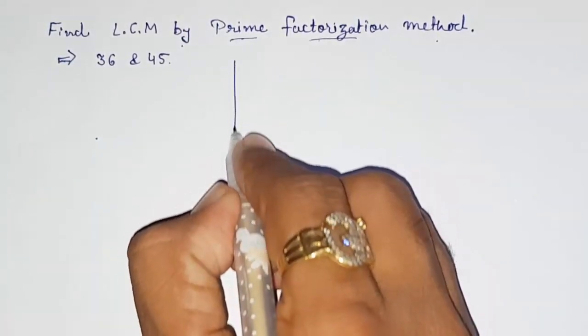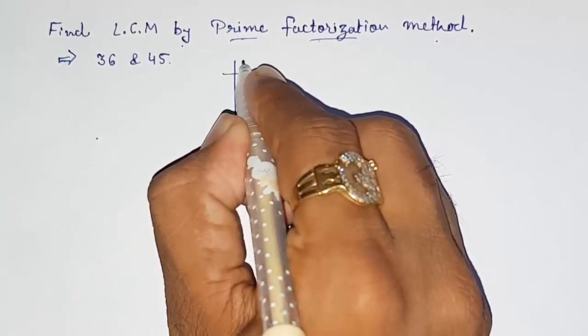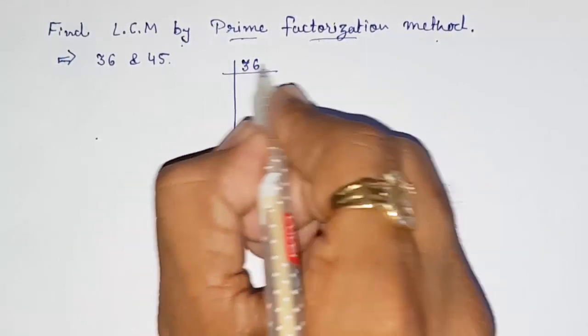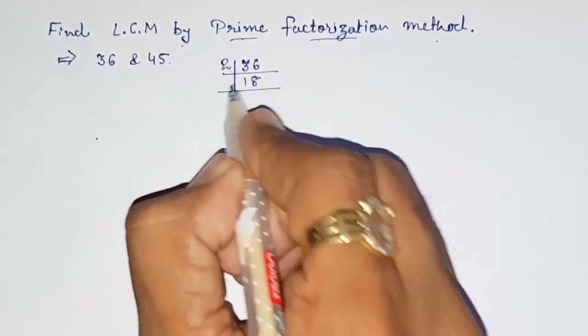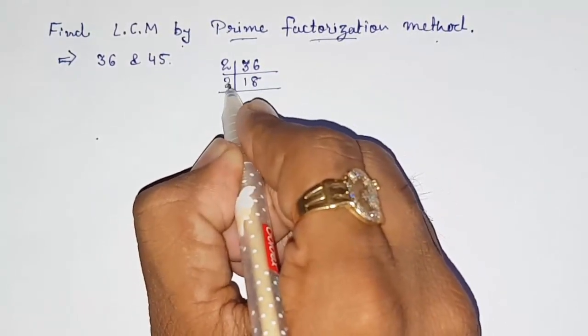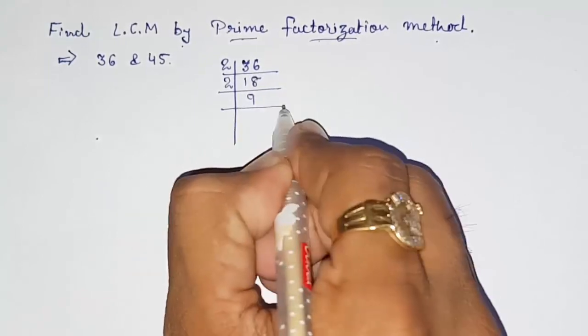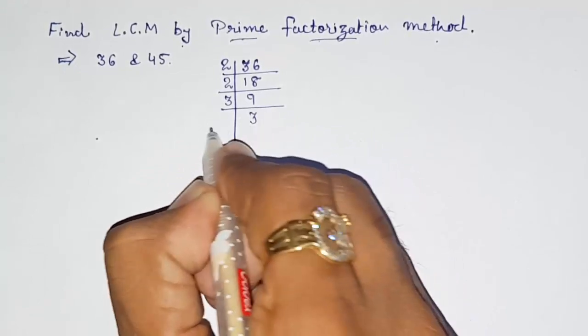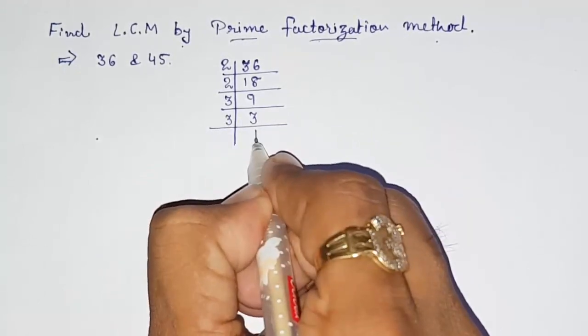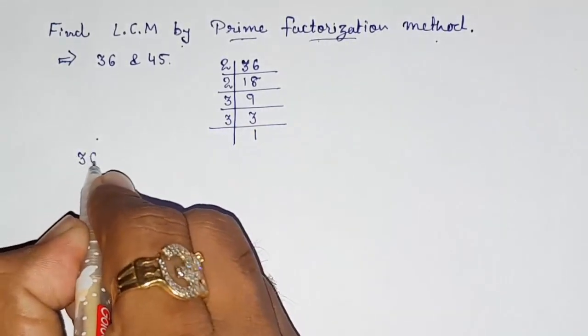So let us find out the factors. 36 is divisible by 2. 2 times 18 is 36. Again this is divisible by 2. 2 times 9 is 18. Now this is not divisible by 2, but it is divisible by 3. 3 times 3 is 9, and 3 times 1. So the prime factors of 36 is 2 into 2 into 3 into 3.